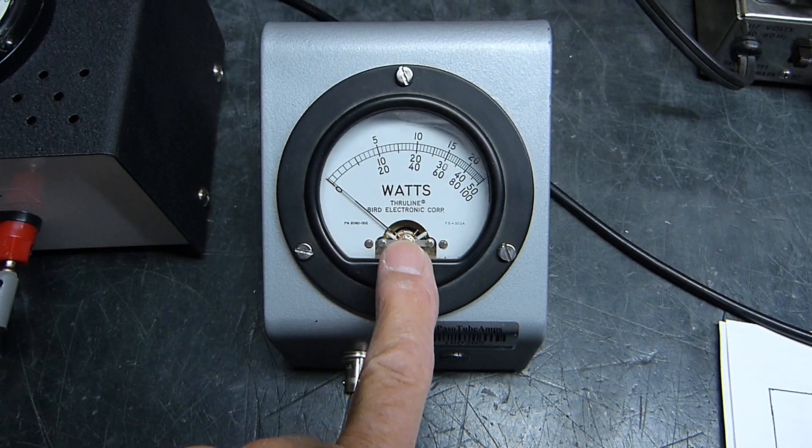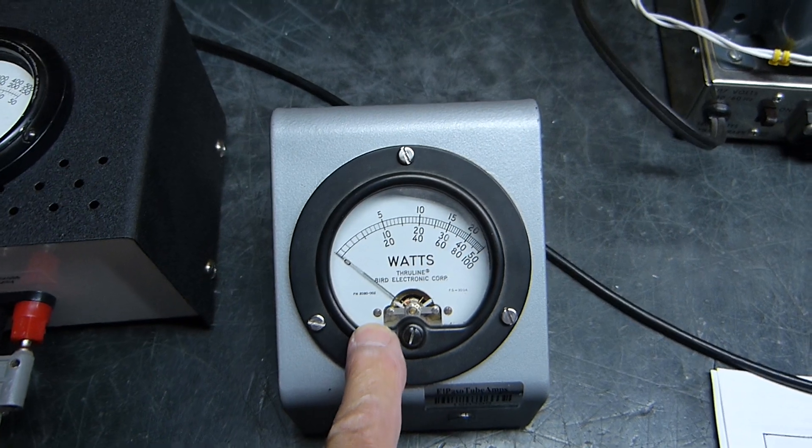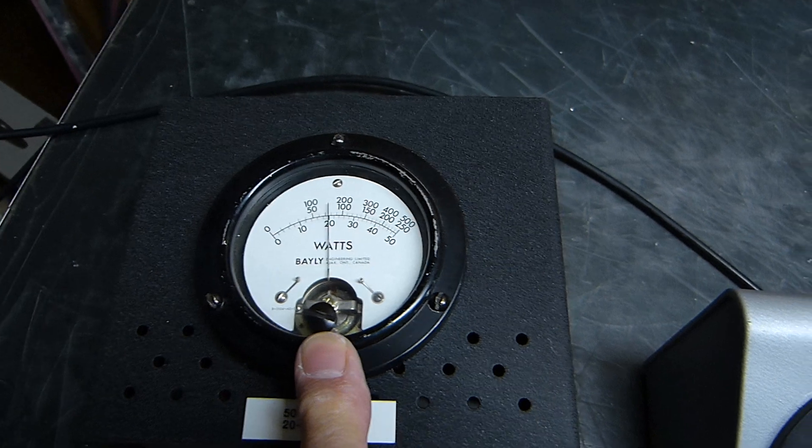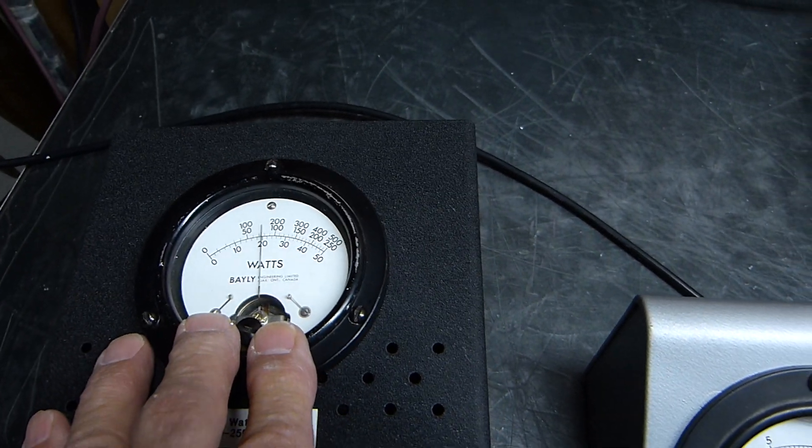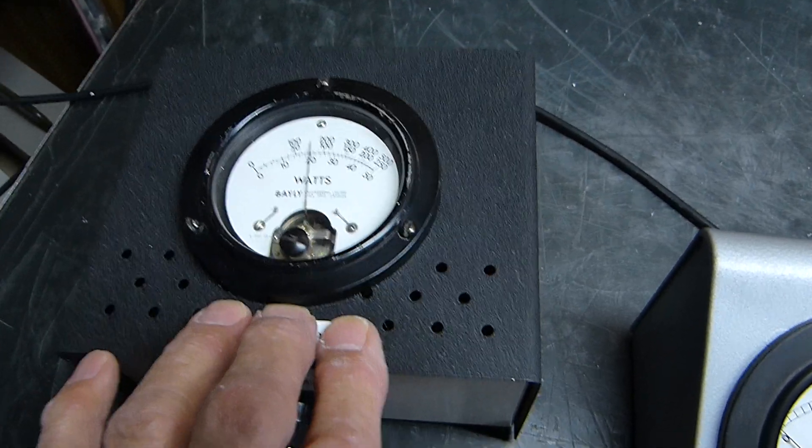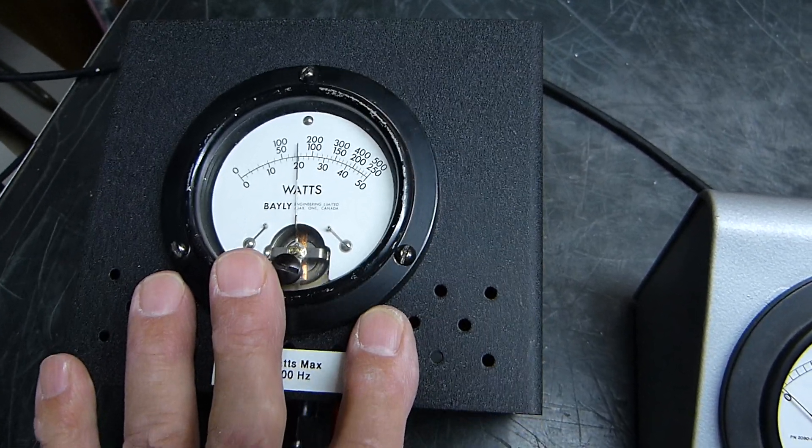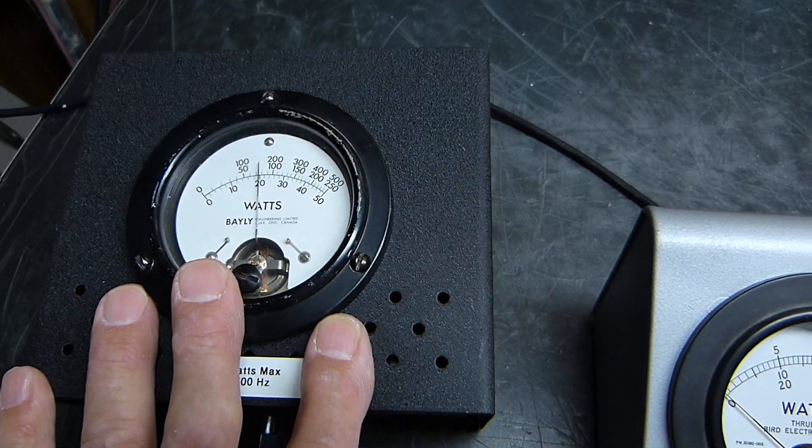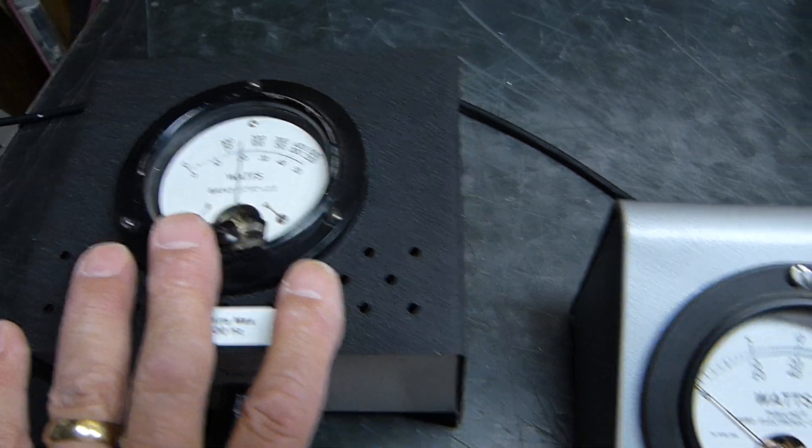This is a 30 microamp meter movement that goes in the Bird Model 43. This is also a 30 microamp meter movement that goes in a different kind of wattmeter. What I always wanted was something very simple. There's no active parts in this, you don't have to plug it in, and there's no vacuum tubes or batteries or anything. It just runs straight off the power derived from across the dummy load.